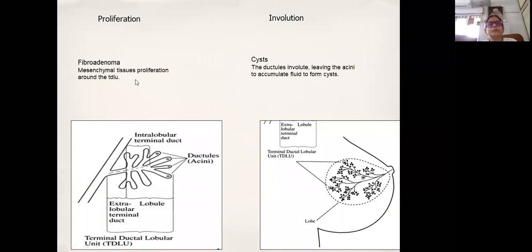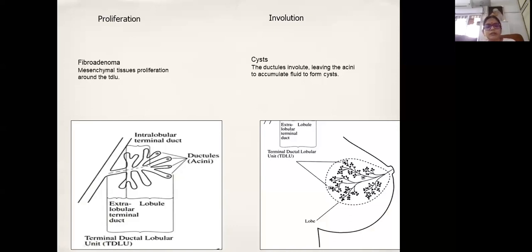Pathology is related to the changes that happen around that age. In the early age group, fibroadenomas are more common because this is when there are more proliferative changes happening. Both the terminal ductal lobular unit and the mesenchymal tissue surrounding it proliferate together — they become bigger in size, more in number, and encapsulated. That is what we call a fibroadenoma.